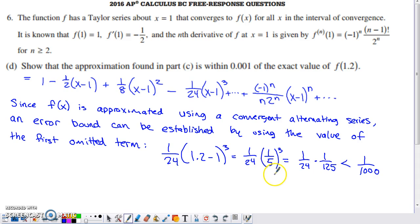If you simplify this, you end up with 1/24, the coefficient, and then (1.2 - 1)^3 turns out to be 1/125. I didn't bother multiplying this out. What I realized was, if I did 10 times 100, I would be equal to 1000 with my denominator. So if I do 24 times 125, I'm significantly larger with that denominator. So 1 over a denominator that's well above 1000 is definitely going to be smaller than 1/1000. And so we've just used the alternating series error bound to establish that conclusion.